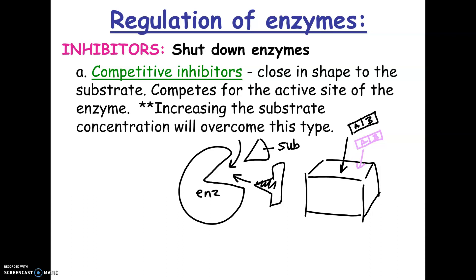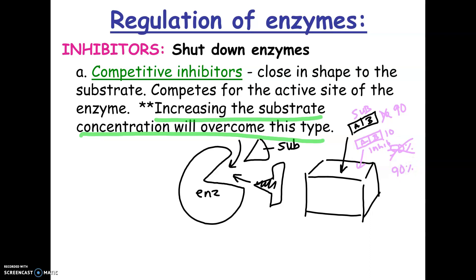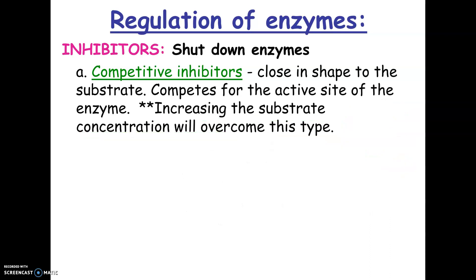Here's an important thing about competitive inhibitors: increasing the substrate concentration will overcome this type of inhibition. If I have 10 of each, my rate is about 50%. But if I increase to 90 of the correct papers — the substrate — and keep the inhibitor the same, now I have a 90% chance of picking up the correct thing. If I increase the substrate enough, those pink ones may have almost no effect at all. So increasing the substrate will overcome or cause a competitive inhibitor to have less of an effect.